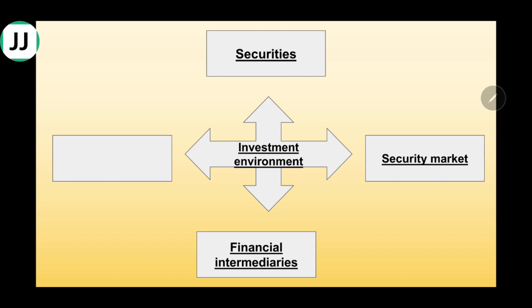Those are the financial intermediaries. The last party is the investor — the person who has excess money and, thinking logically, doesn't need it right now. So these are the four parties in the investment environment. Moving on, we'll learn about the investment decision process. When you studied marketing, there was a consumer decision process, and similarly, here we have the investment decision process.